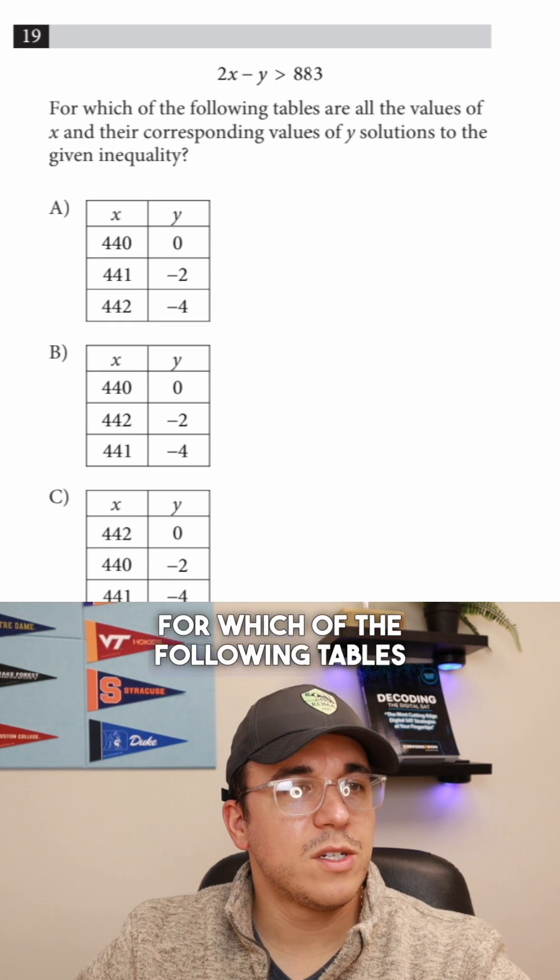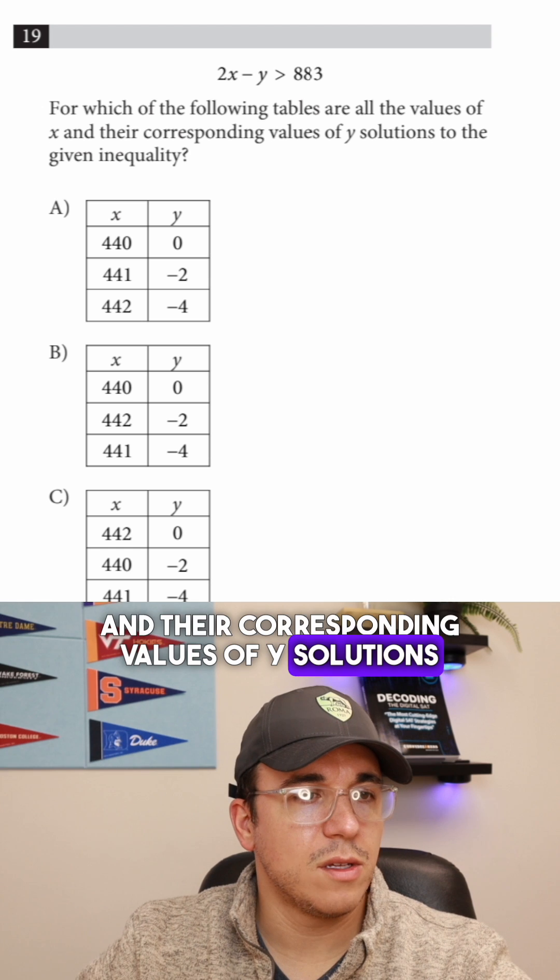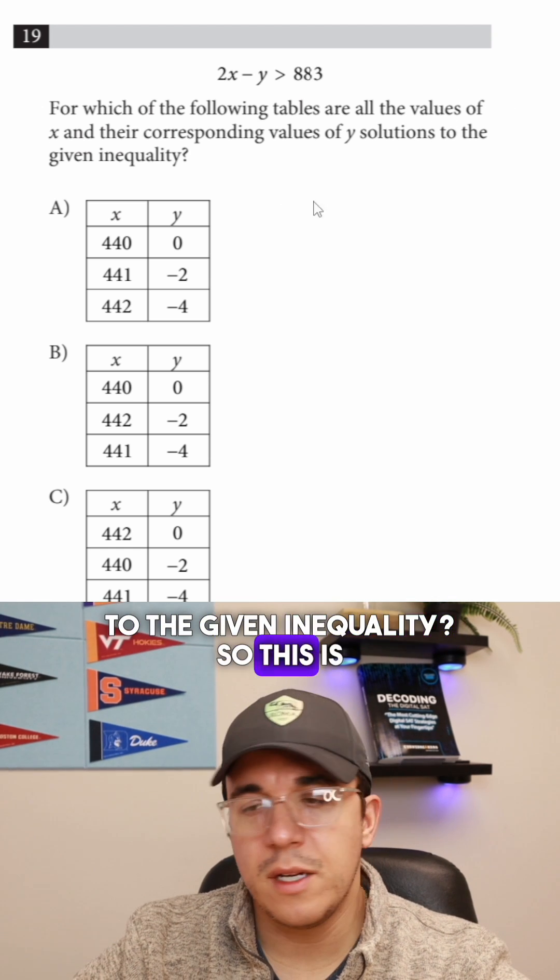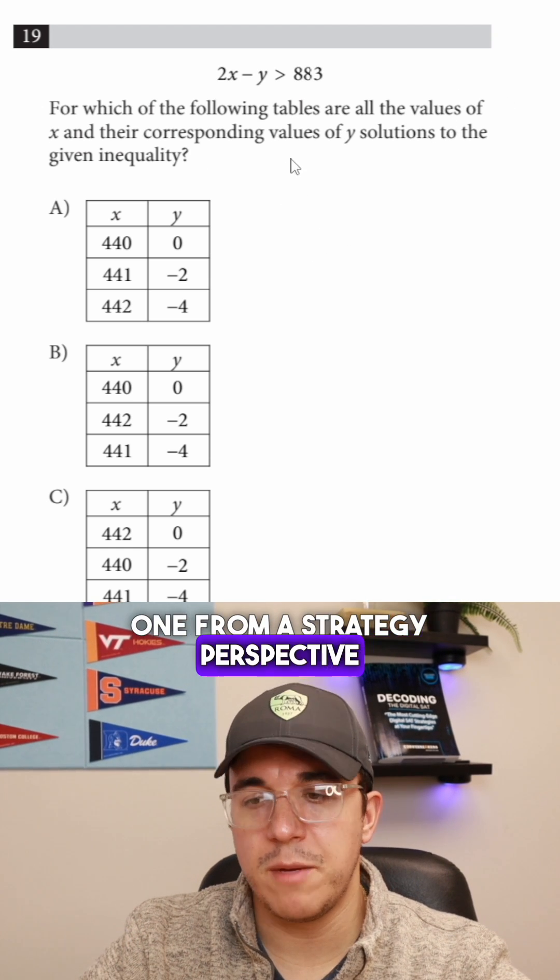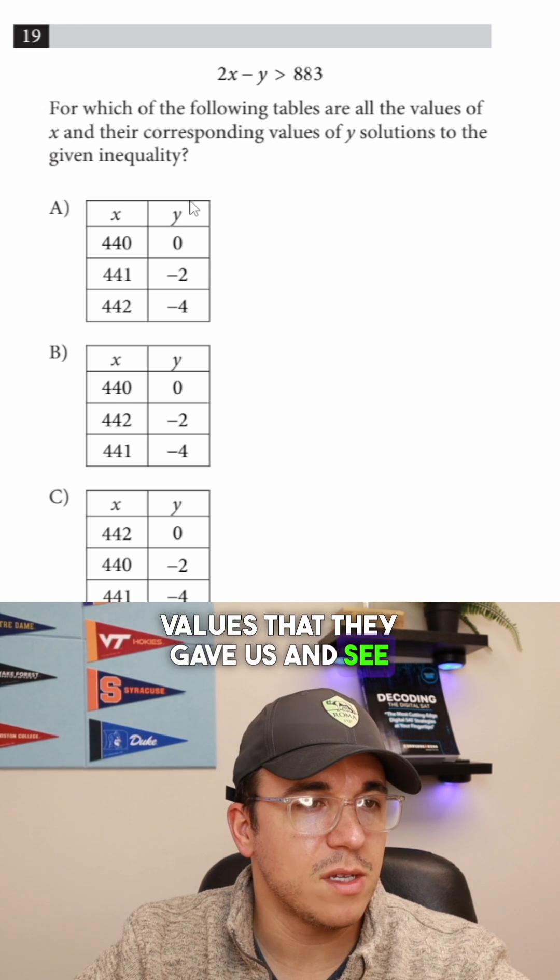All right, let's get into number 19. For which of the following tables are all the values of x and their corresponding values of y solutions to the given inequality? So this is a pretty easy one from a strategy perspective on the digital SAT. We just want to plug in the values that they gave us and see what we get.